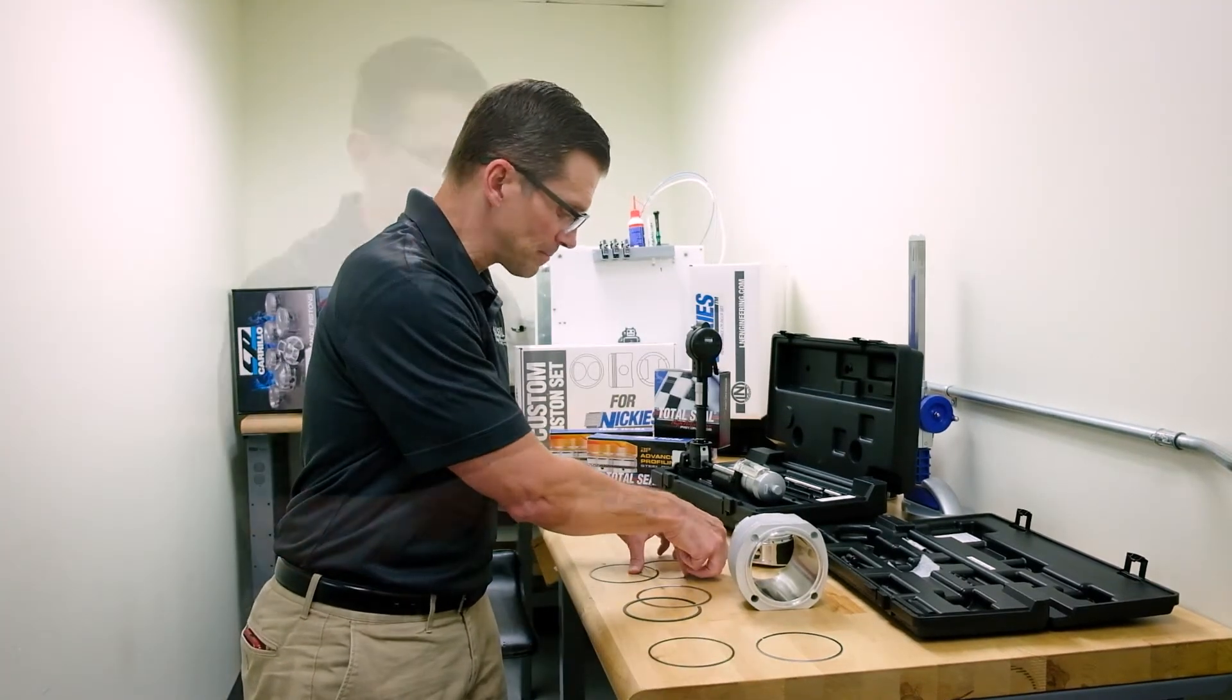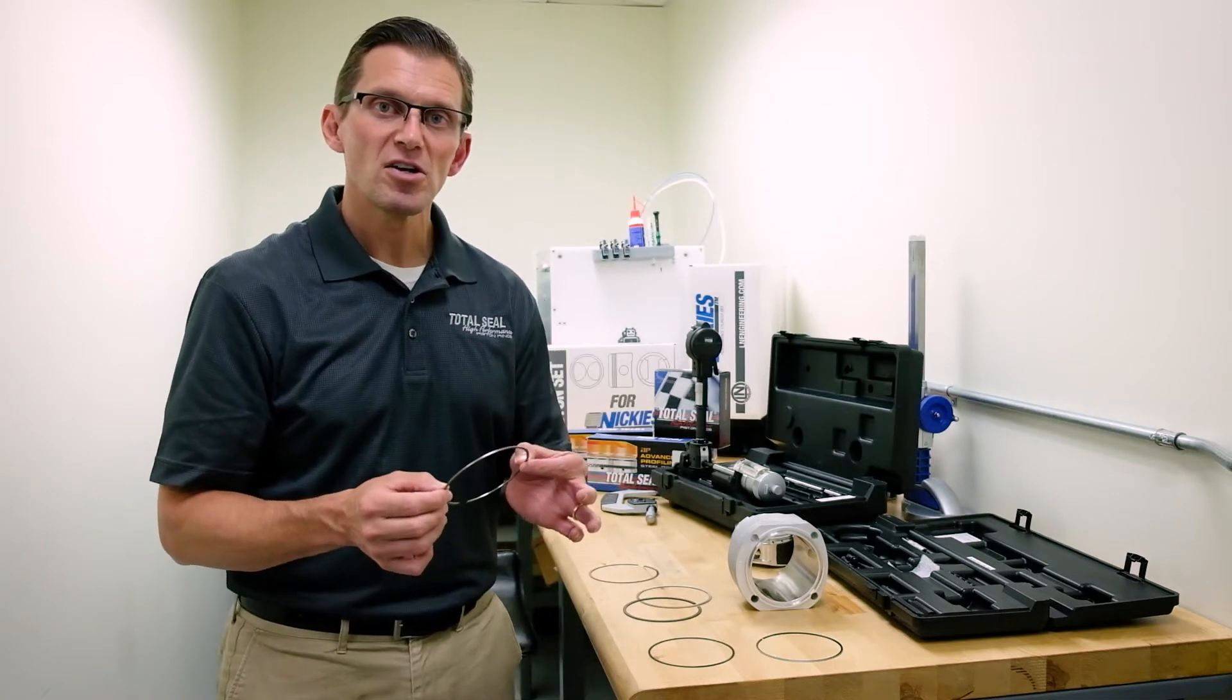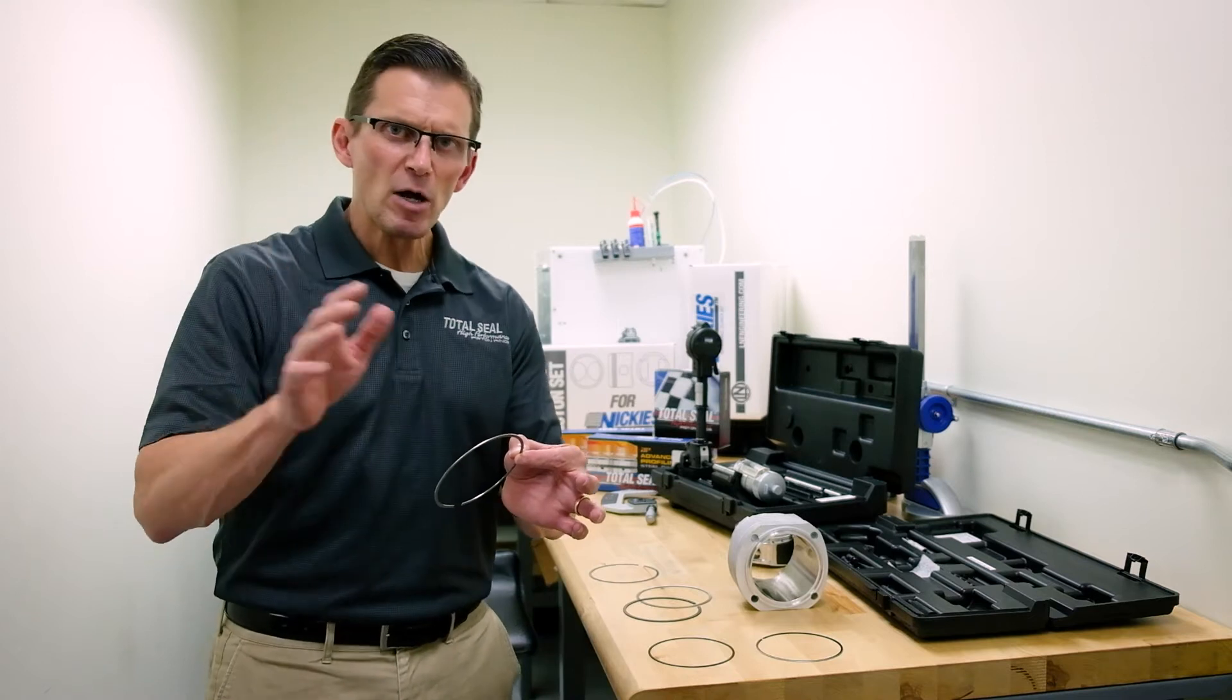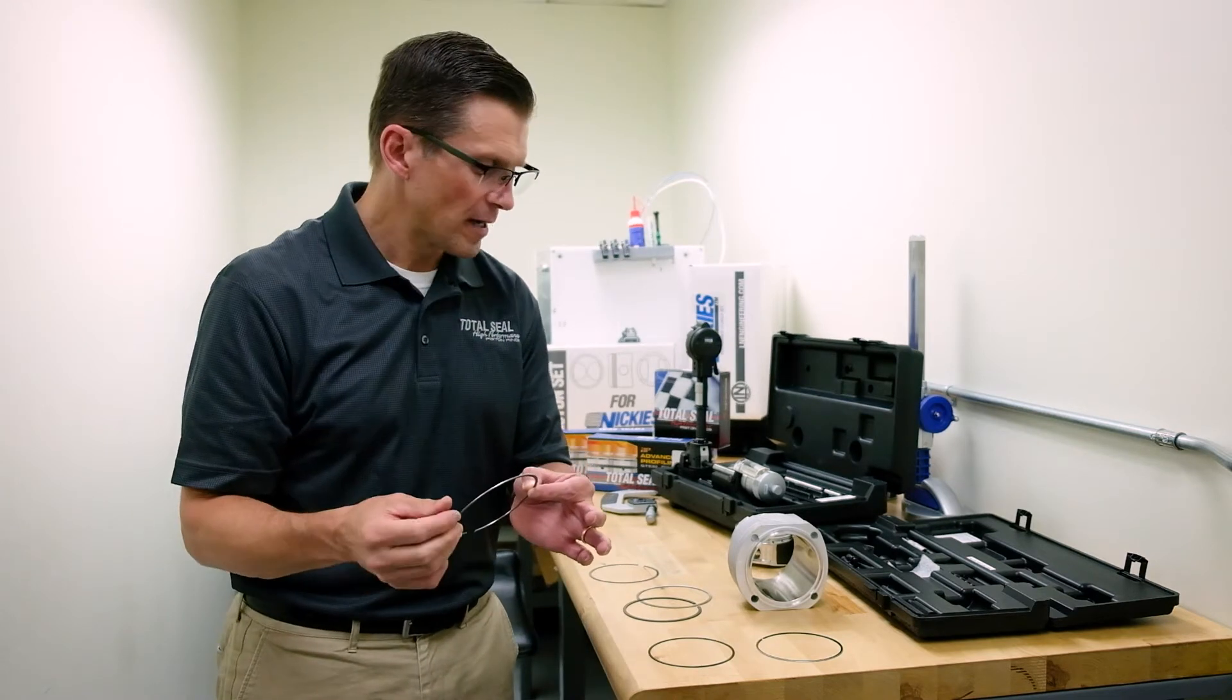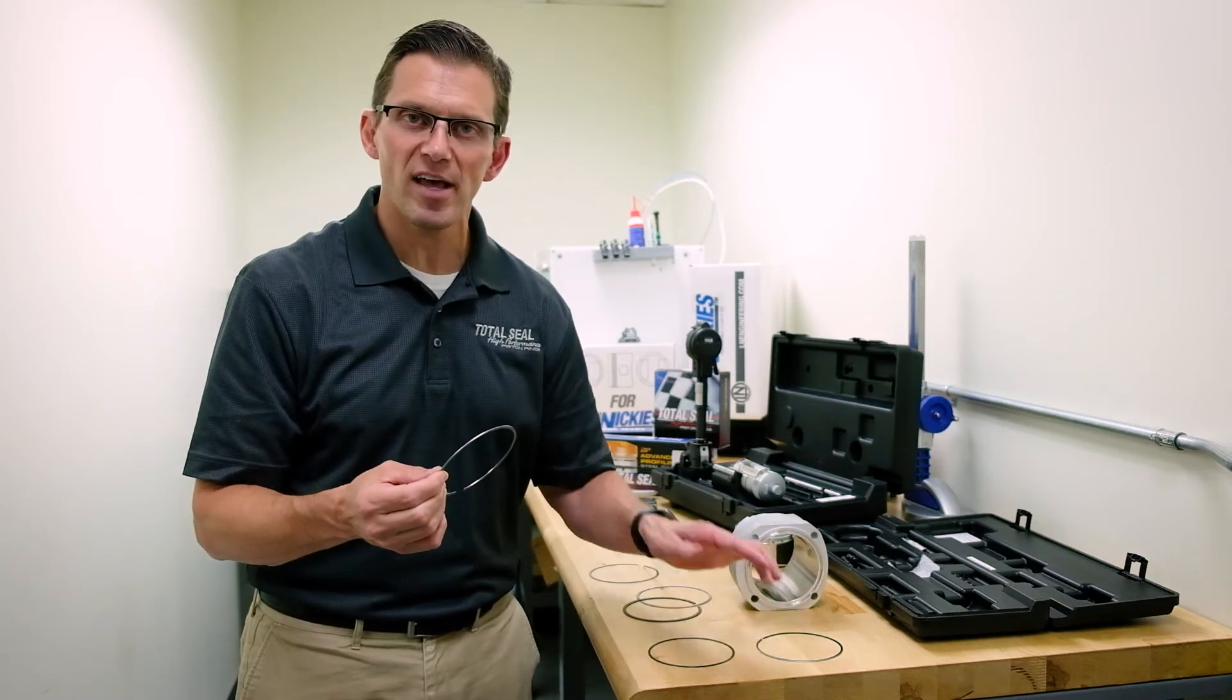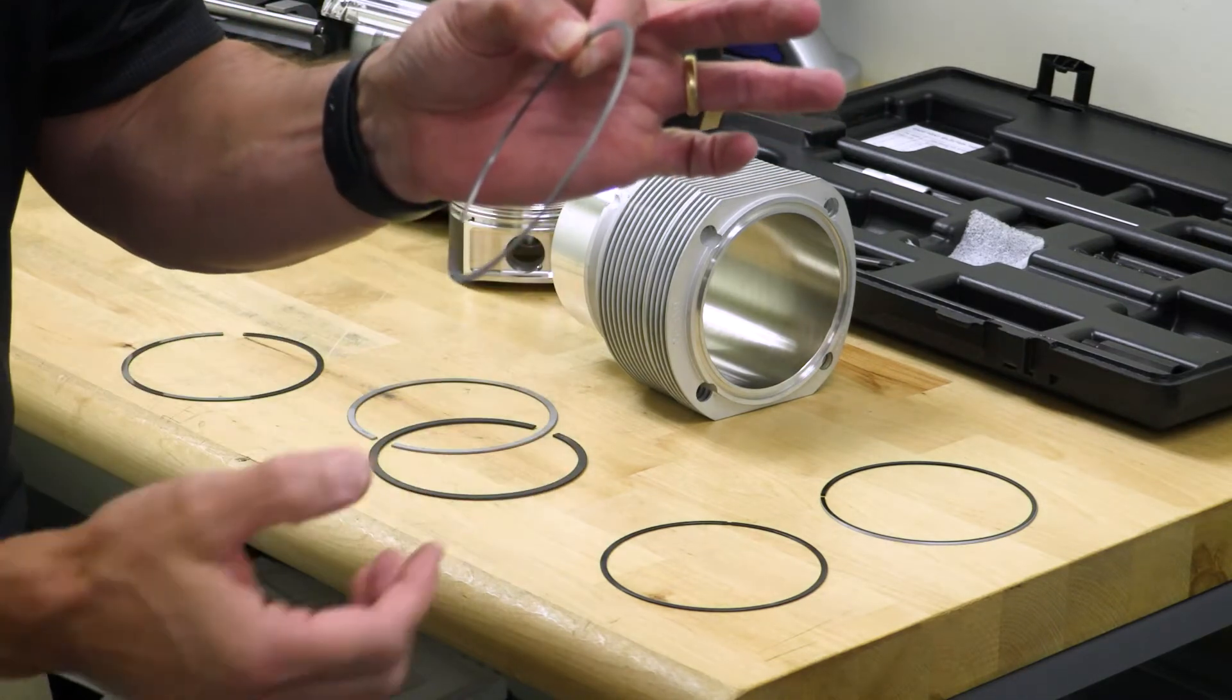Even beyond that, there are hard chrome replacements such as chrome nitride. And you're like, that sounds the same word. Well, hard chrome, like these oil rails, is a different process than a PVD-coated chrome nitride.